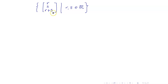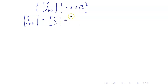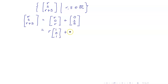Let us find a spanning set. Let x1 = r and x2 = s, so x1 = r, x2 = s, x3 = r + s. Separating by variables r and s, this is r(1, 0, 1) + s(0, 1, 1). Hence, this set is the span of (1, 0, 1) and (0, 1, 1).